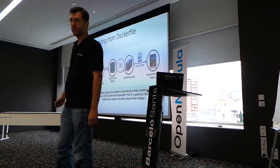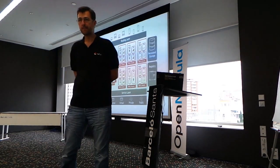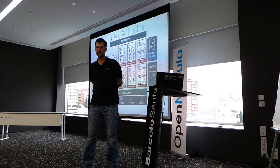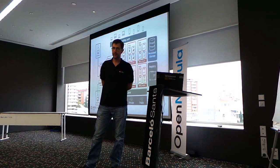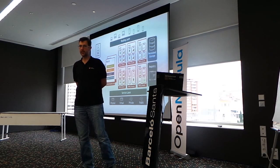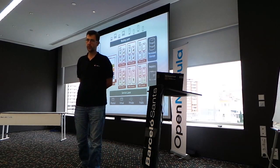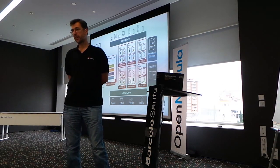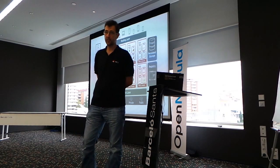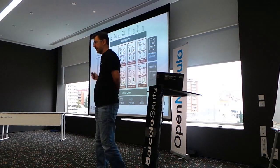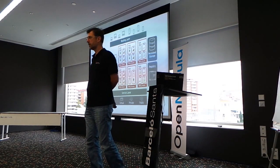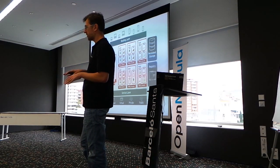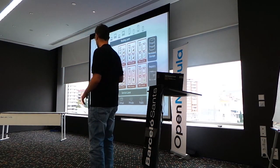Regarding the registry — it's not Pulp with Crane as used in Satellite. Internally in OpenShift we are using the Docker registry, a modified version that allows authentication, tenancy, and multi-tenancy. Because this is a multi-tenant environment, it allows different user communities to use the infrastructure without seeing each other or interacting with each other.